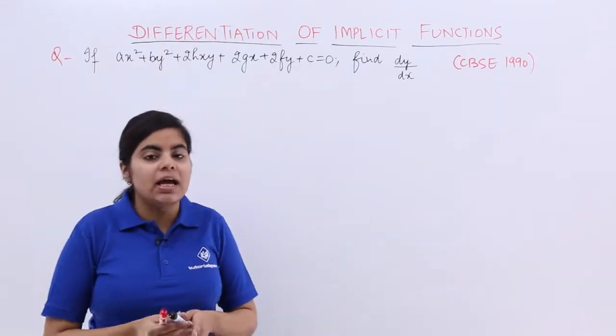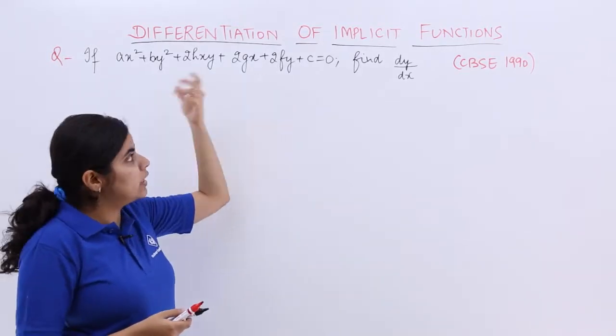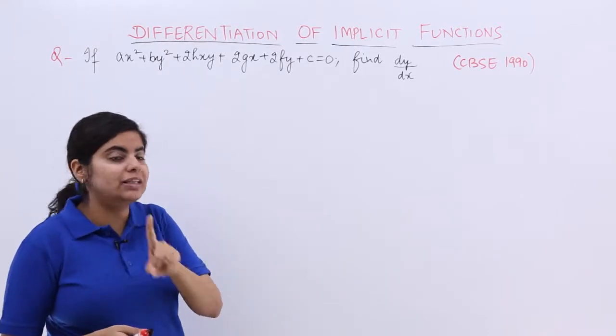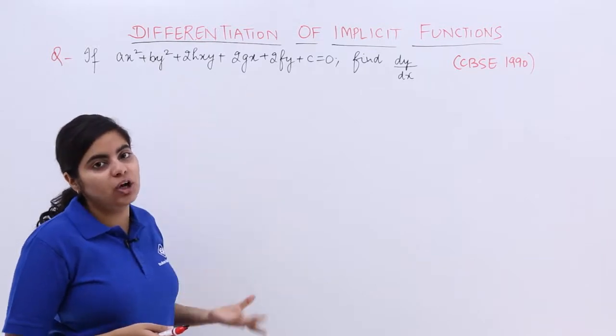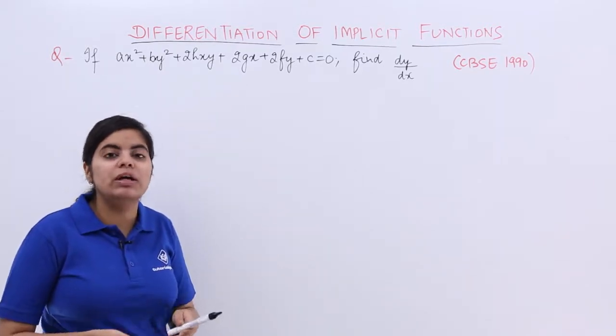I know that had the question been simple—x², y², x, y—no issues with it. But because of this one term, 2hxy, wherein x and y cannot be separated, this type of question falls in the category of implicit function.